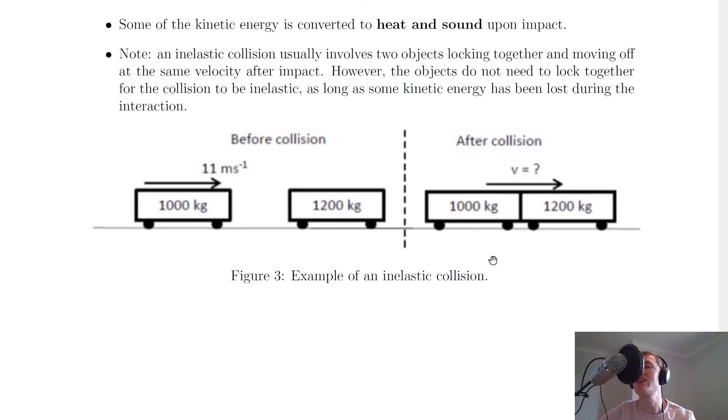So there's just a picture representation of an inelastic collision where the two objects lock together. We've got a 1000kg trolley and a 1200kg trolley and the first one is moving at 11m per second. We can sketch what happens before the collision and then what happens after the collision. You'll see that we've got V equals question mark because often you'll be asked to work out what the velocity of the two objects are after the collision. We could use the principle of conservation of momentum in symbol form to try and work this out. Sketching the situation of what's going on before and after the collision is going to be very useful for you when you're doing problems.